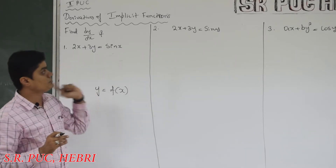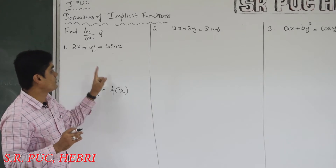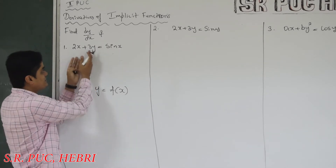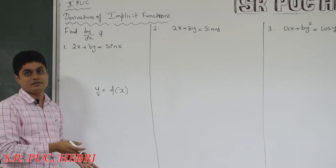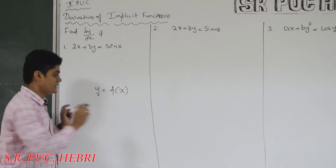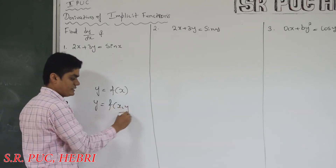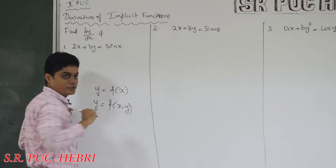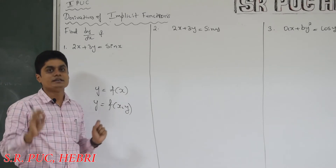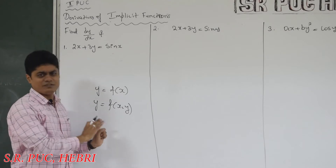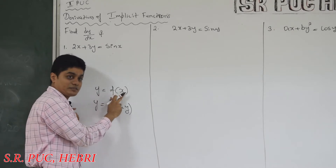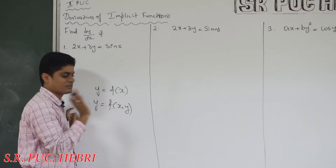Now you can see some problems on the board where x and y are not separated. Take the first example: 2x + 3y = sin x. Here x is on the left-hand side and y is also on the left-hand side. If a function cannot be written as y = f(x) because x and y are not separated, such functions are called implicit functions. Explicit means variables are separated; implicit means variables are not separated.